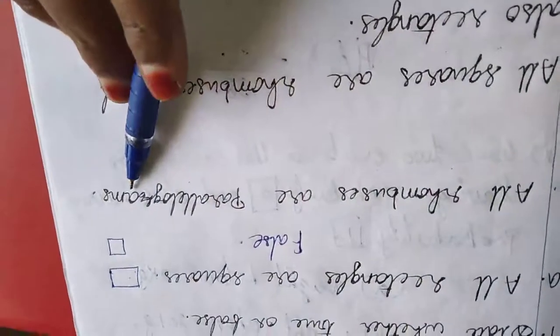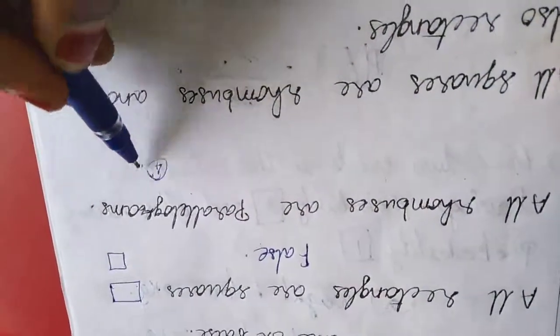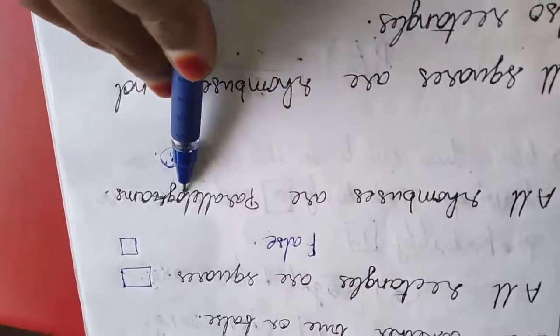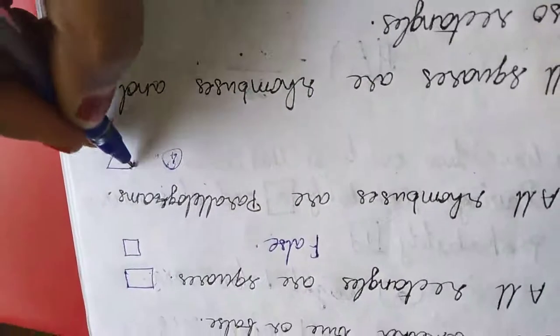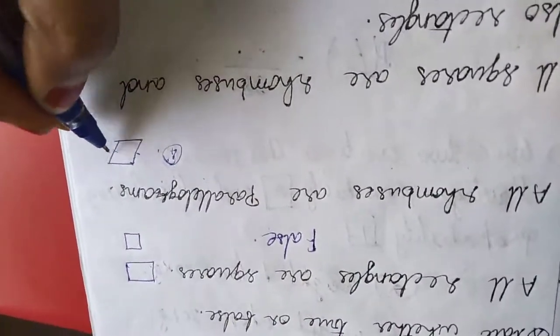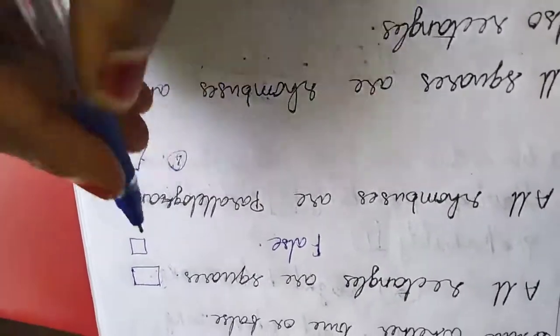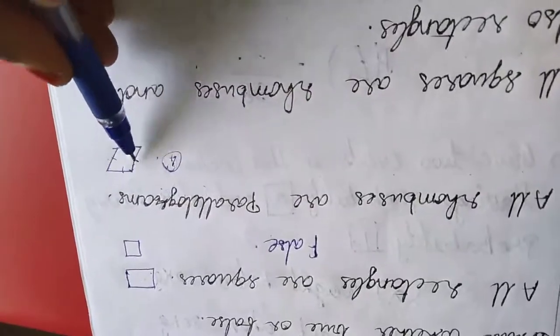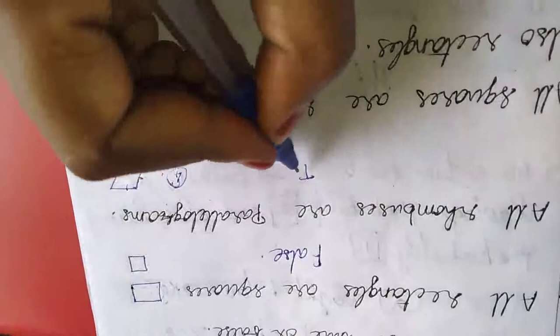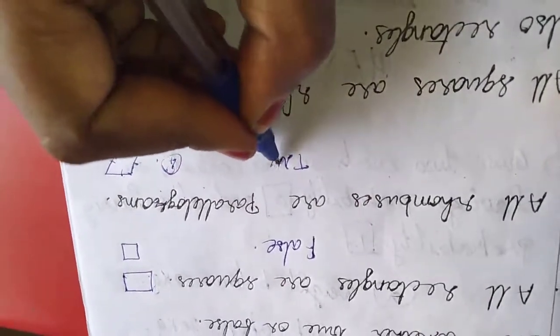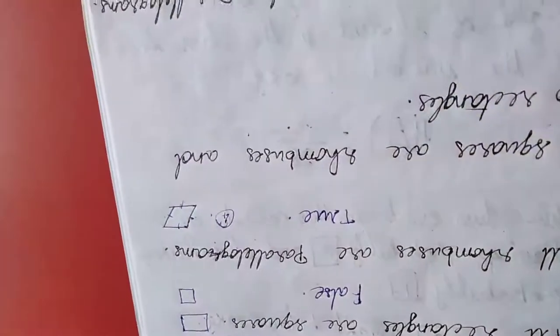Next one, all rhombuses are parallelograms. A rhombus has four sides equal, and opposite sides are parallel. If a pair is equal then it's a parallelogram, so it is true.